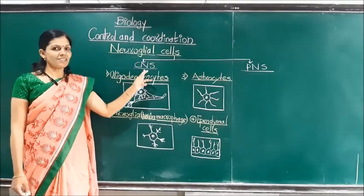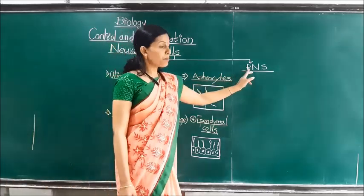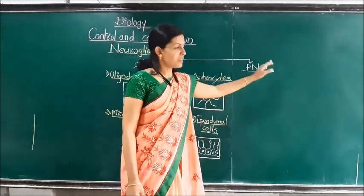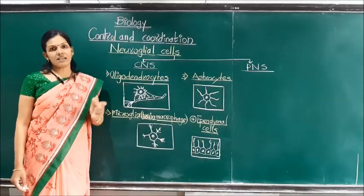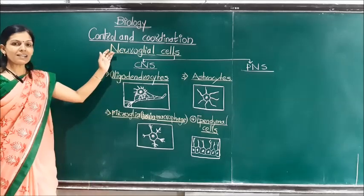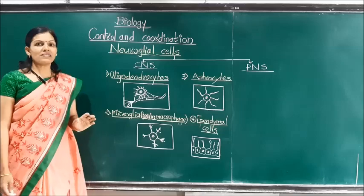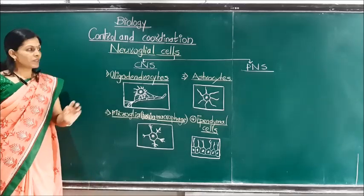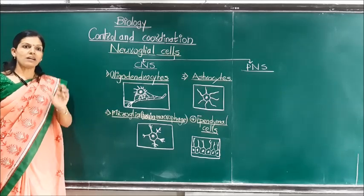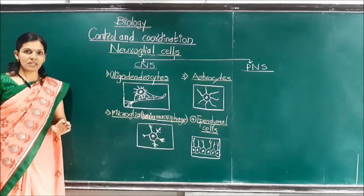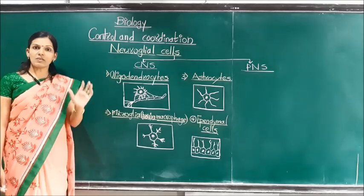The CNS, that is the central nervous system, includes the brain and spinal cord, while the PNS, that is the peripheral nervous system, includes nerve fibers which arise from the central nervous system. These neuroglial cells provide nutrition to the nerve fibers and they maintain homeostasis in the nervous tissue.